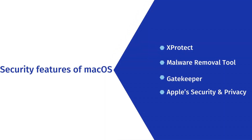Security features of macOS: 1. XProtect — a built-in security feature that checks downloaded apps if they contain any known malware. 2. Malware Removal Tool — this removes malware that has made its way into your system files and automatically removes malware detected by XProtect. 3. Gatekeeper — this blocks malware apps and ensures that only trusted software runs on Mac. 4. Apple's Security and Privacy — Apple does not allow the installation of third-party software unless it's from the App Store or identified developers, as per the security and privacy settings.